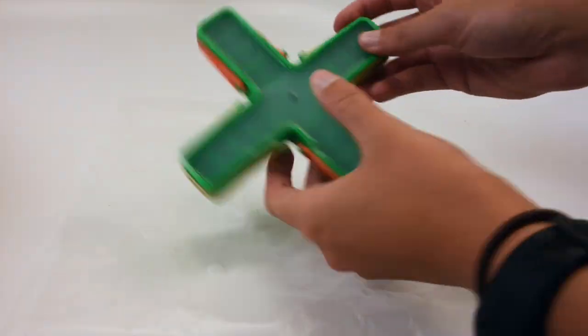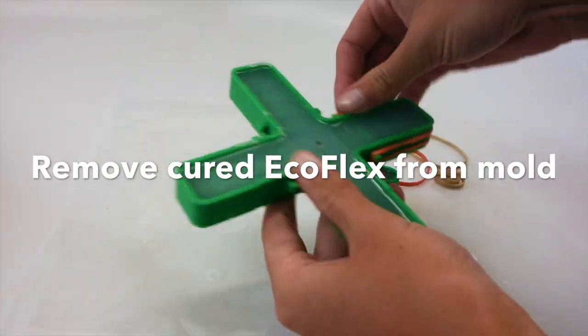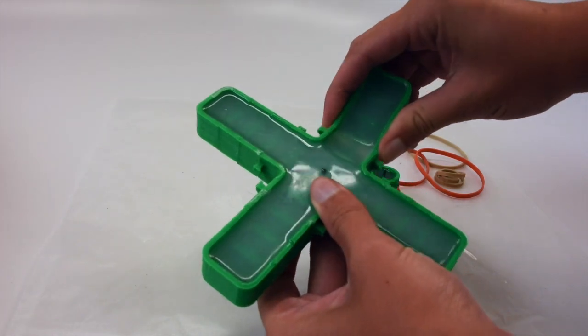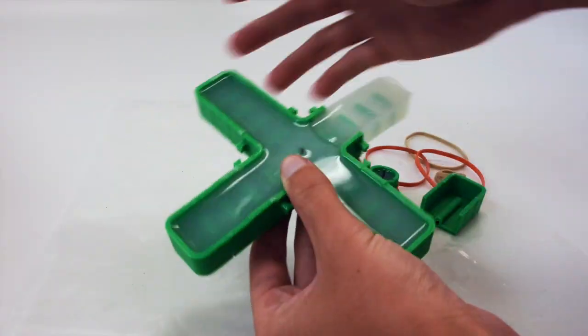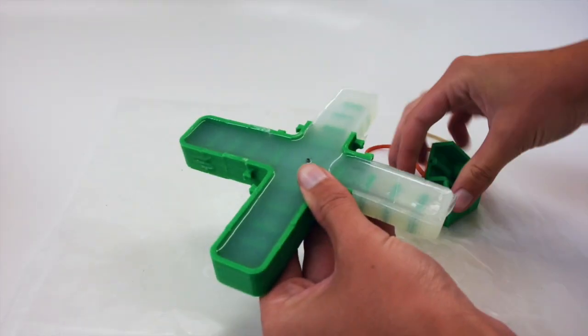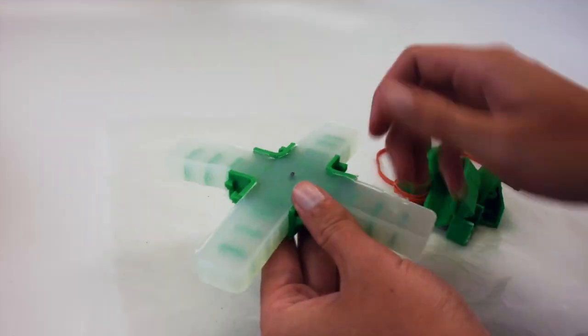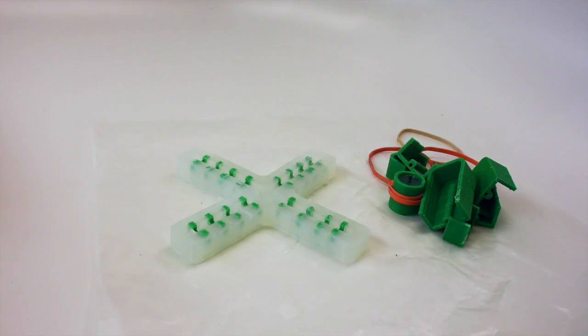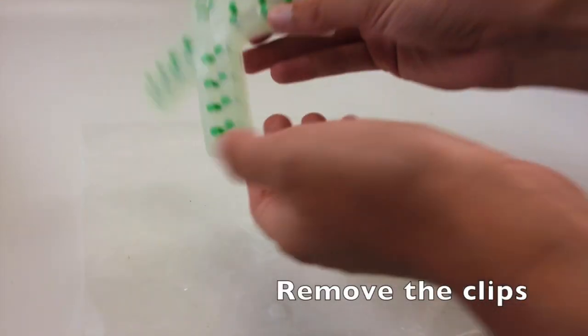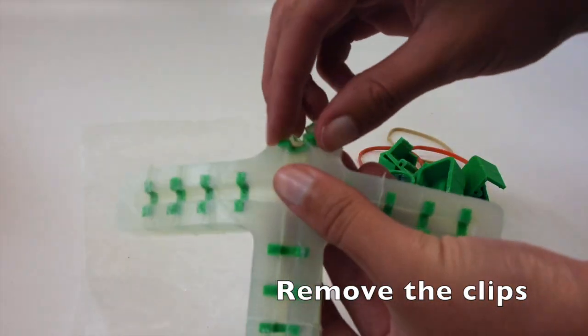After the EcoFlex is cured, remove it from the mold. EcoFlex can stretch many times its original size without tearing and will rebound to its original form without distortion, so don't be afraid to really pull when removing it from the mold. Don't forget to remove the clips from the EcoFlex.